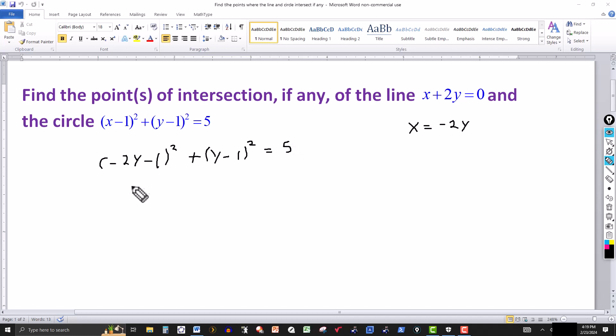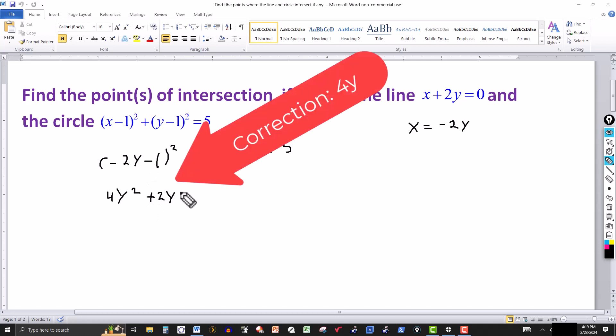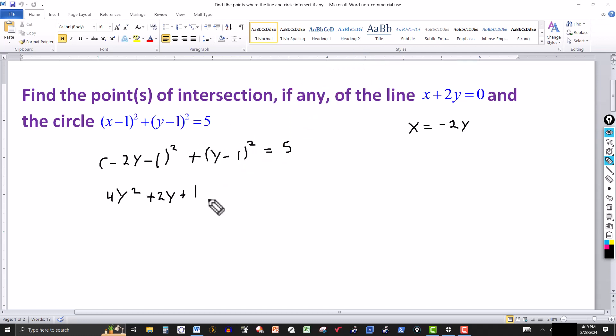So this quantity squared would give me the minus 2y squared, which would be 4y². And then the product of these two terms would be a plus 4y. And then it's plus the second term squared, that's a negative 1 squared is a plus 1. The same thing is multiplying minus 2y minus 1, and then multiplying it by minus 2y minus 1. You're squaring it.